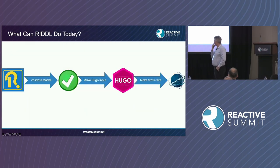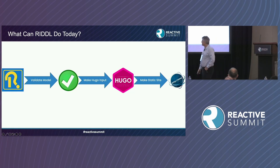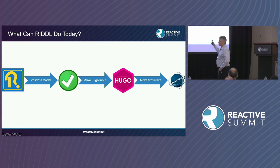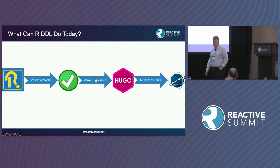Currently, RIDDLE can validate your model with the compiler, and then generate input for Hugo — a static site generator — which processes that into a static site.